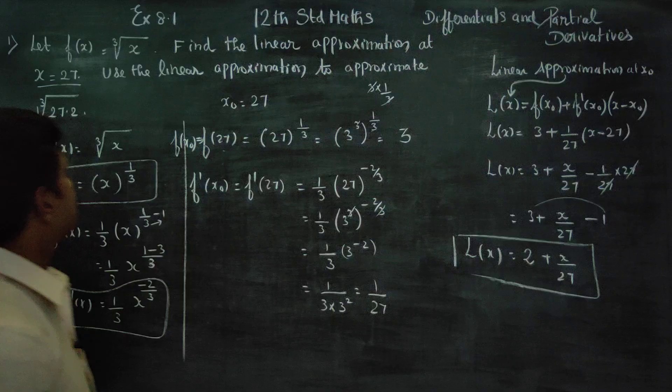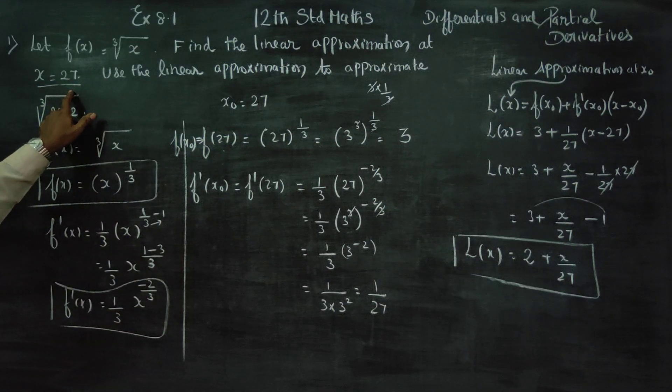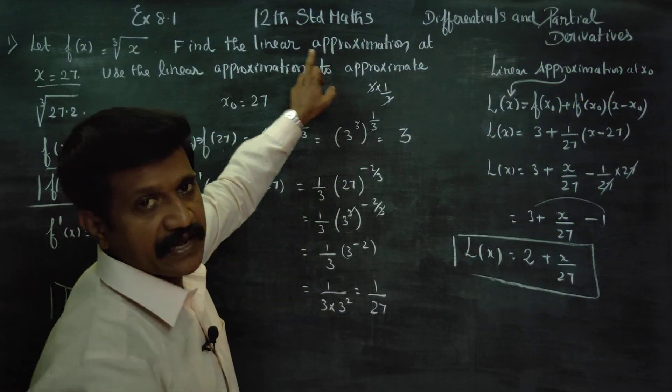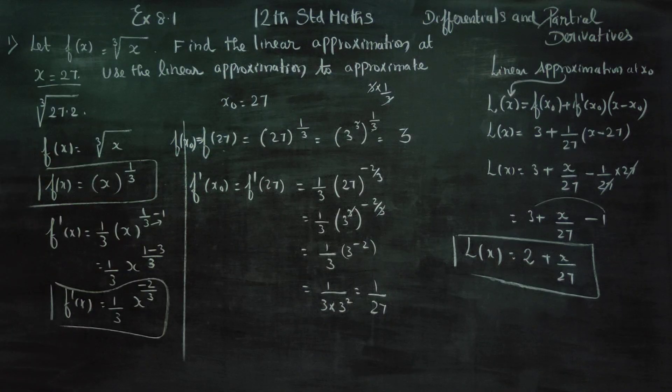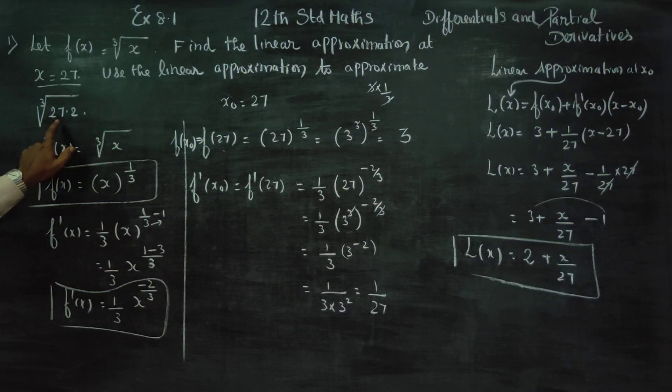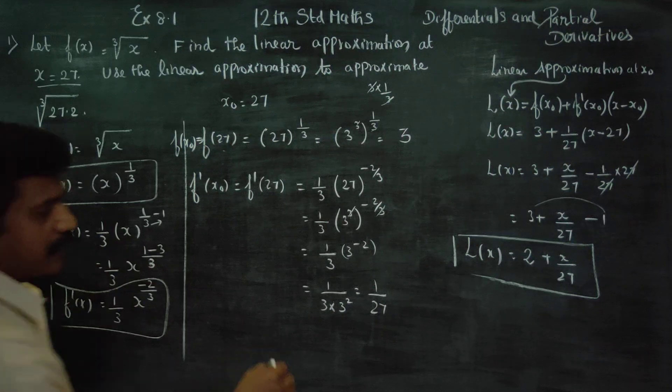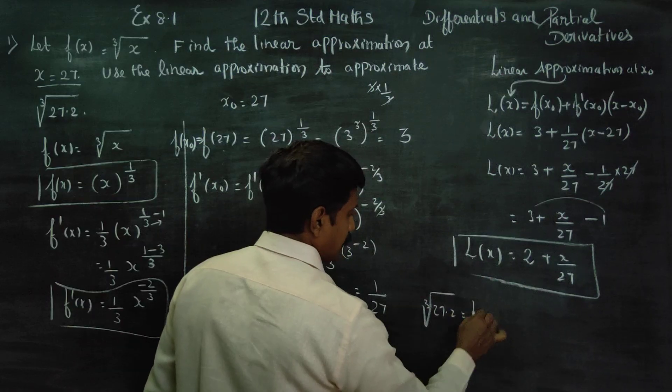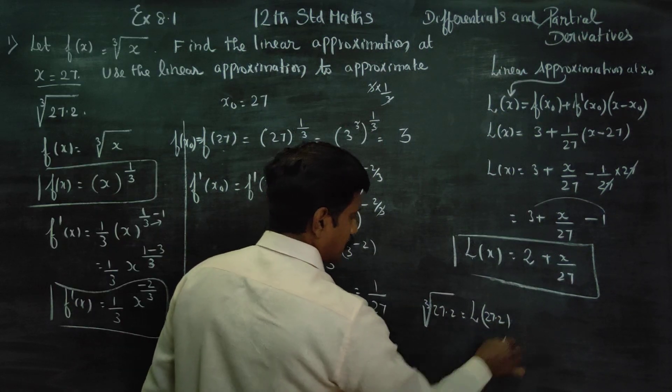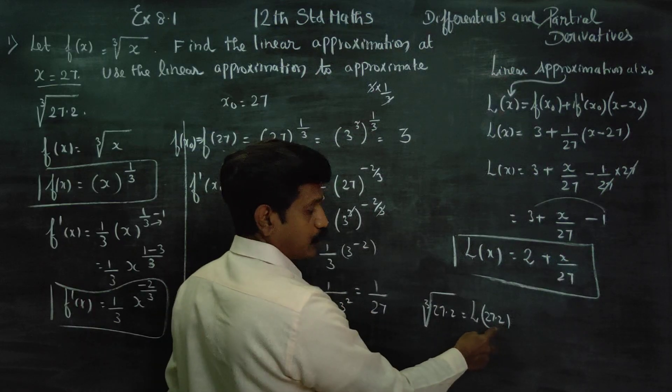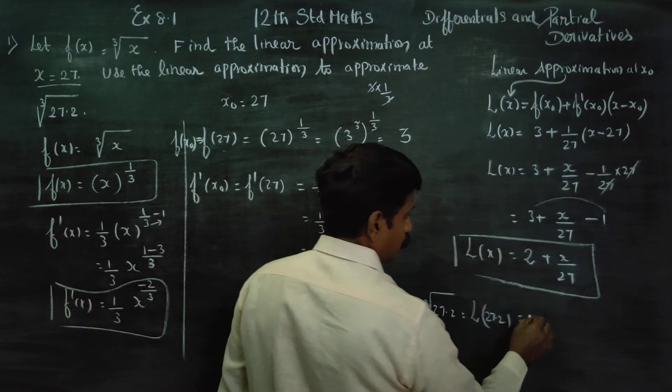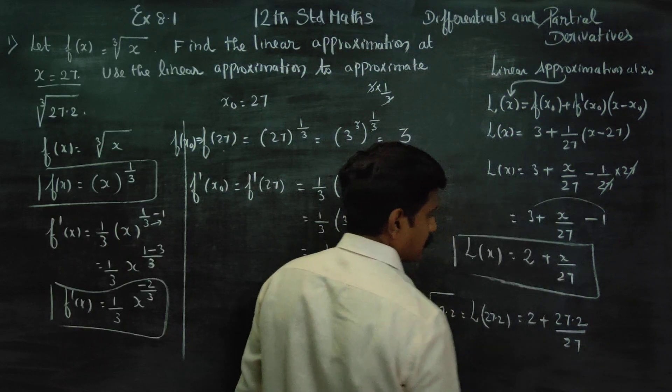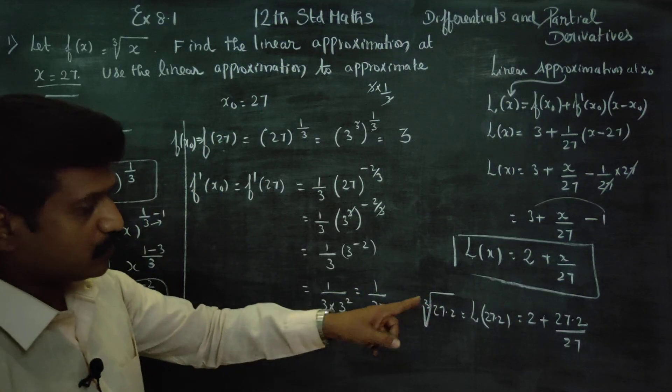Question number 2: using the linear approximation, find the value of cube root of 27.2. Linear approximate value of cube root of 27.2 means x is 27.2. L(27.2) equals 2 plus 27.2/27.